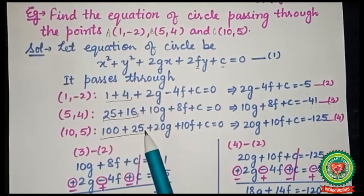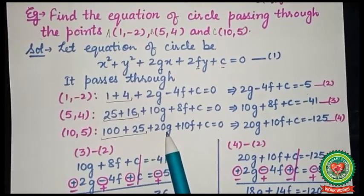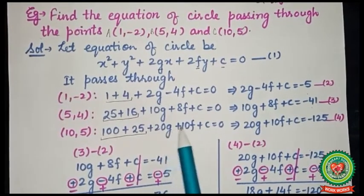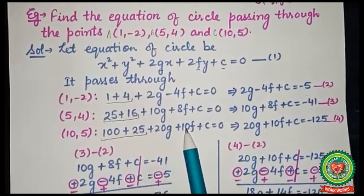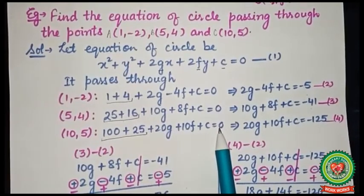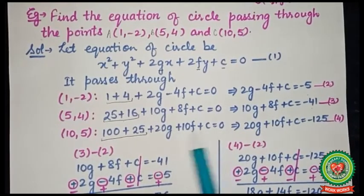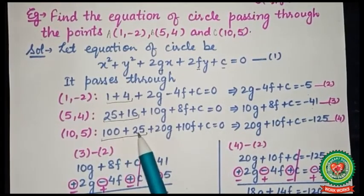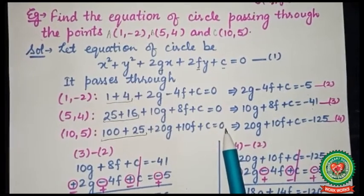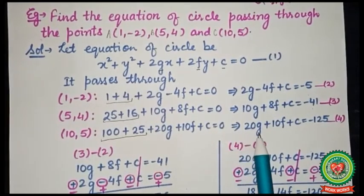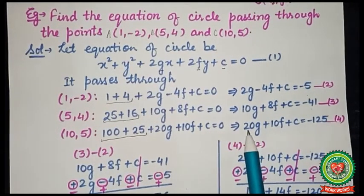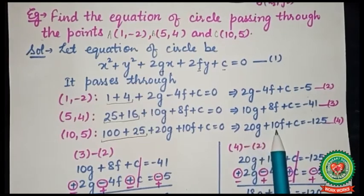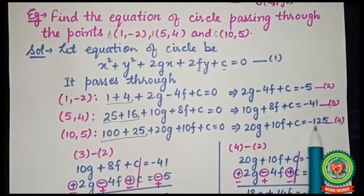Similarly, from the third point (10, 5), we get 100 + 25 + 20g + 10f + c = 0. Shifting 100 + 25 = 125 to the right-hand side gives 20g + 10f + c = -125. Mark this as equation number 4.